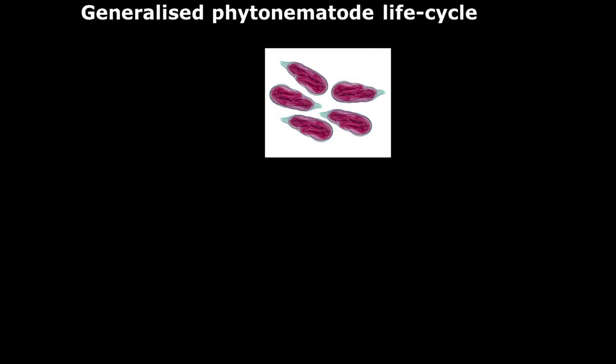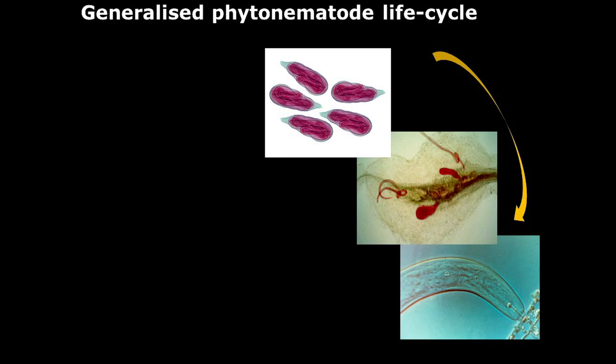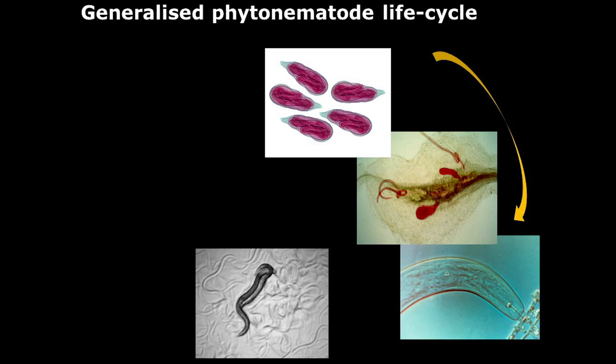Depending on the species of nematode, they can enter the root — shown here stained in red with acid fuchsin — where the root starts to gall. Some nematodes don't enter the root and just feed on the surface, as you can see in the bottom right-hand corner. Nematodes have various modes of reproduction: some are asexual, in which males are redundant, but if they're sexual, they go through a mating phase — this is C. elegans mating on a plate of E. coli bacteria.